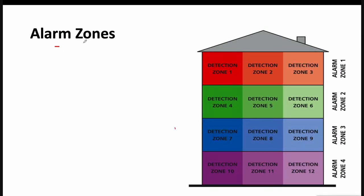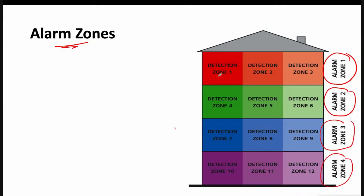For alarm zones, it is recommended to divide the building into zones where each entire floor is one alarm zone. A floor may have many detection zones, but it will have only one alarm zone.